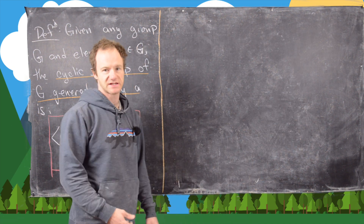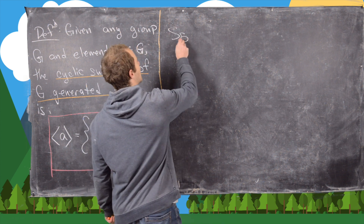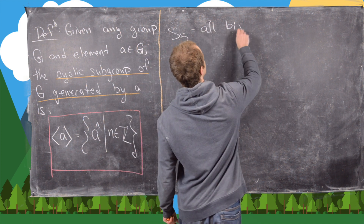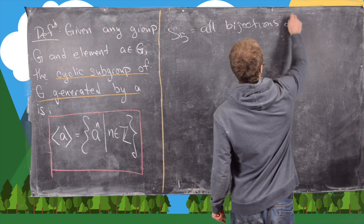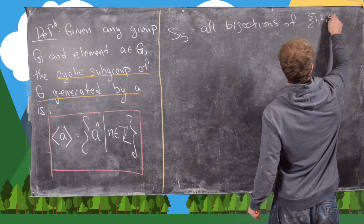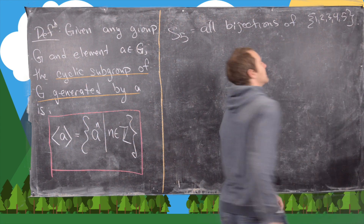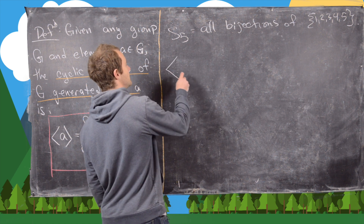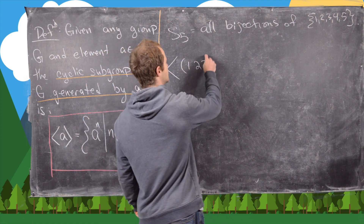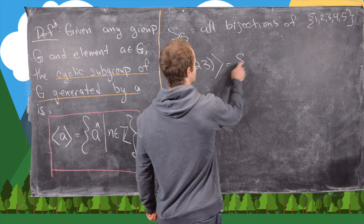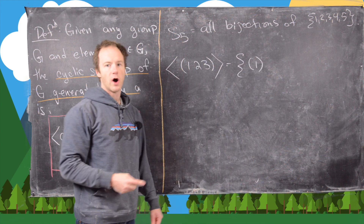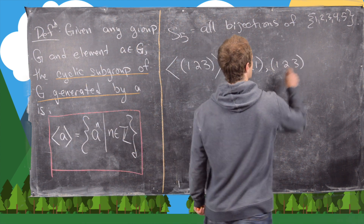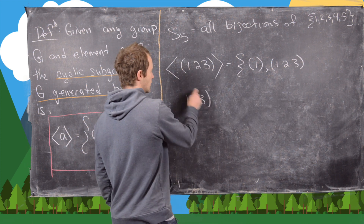For our last example, we look at the symmetric group S5, which is all bijections of the set {1, 2, 3, 4, 5} using cycle notation. Let's look at the cyclic subgroup generated by the 3-cycle (1 2 3). This will contain the identity (that's (1 2 3) to the zeroth power), then the cycle (1 2 3), and then we calculate (1 2 3) squared.